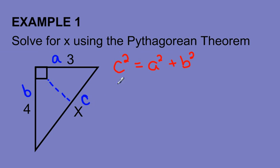I'm going to sub in the values that I know. Well, c is just our x. That's what we're looking for. a is 3. My b value is 4. So that's 4 squared.